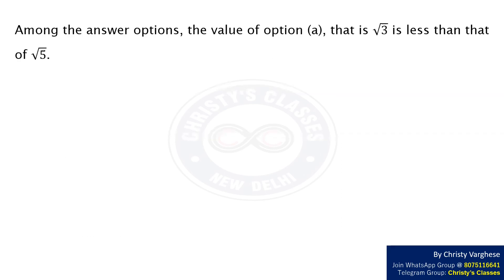Among the answer options the value of option A, that is √3, is less than that of √5. Hence we have to eliminate one of them for finding the length of the shortest path. For that let us find the length of diagonal AB.